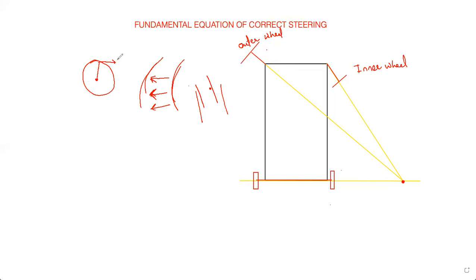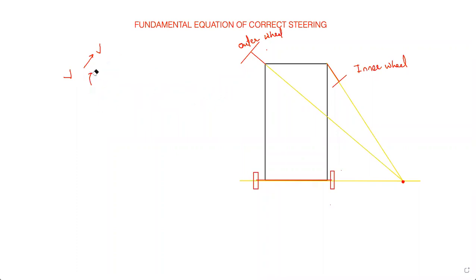This is the velocity direction, which is always tangent. If it is rotating clockwise, this is the velocity direction. If I draw perpendiculars, they all meet at the center of the circle, so we call it the center of rotation. Whenever you draw perpendicular to the velocity, you get the center of rotation. Even for the rear wheels, the velocity is in this direction and the perpendicular gives the same center of instantaneous rotation, point I.